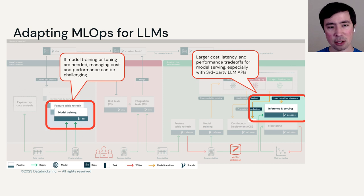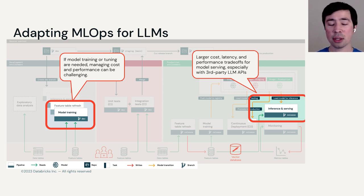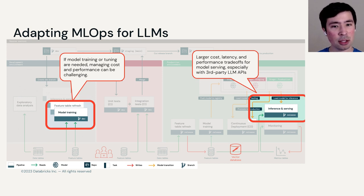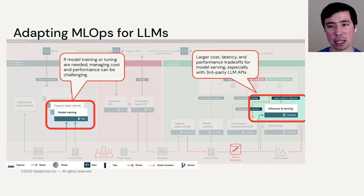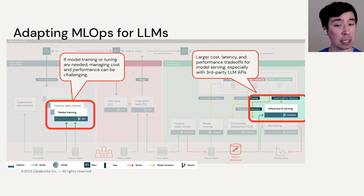Cost and performance can also be challenging. Model training or tuning may need to be managed carefully on the left, and in serving you may see larger costs, latency, and performance trade-offs — especially when comparing your own fine-tuned model versus a paid third-party LLM API. I will give the caveat that I'm comparing against traditional ML, by which I mean if you're coming from a computer vision or NLP background where you worked a lot with deep learning already, LLMs are going to be pretty familiar in terms of the costs of training, fine-tuning, and inference.